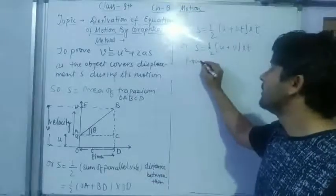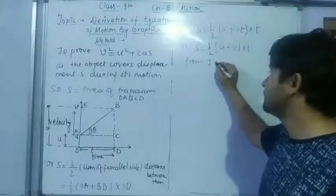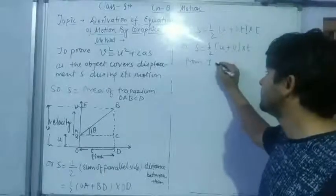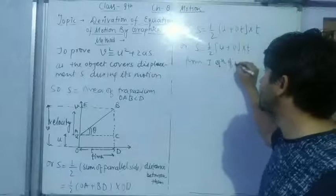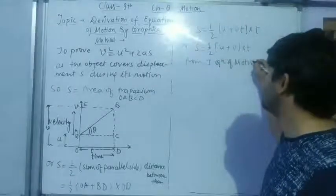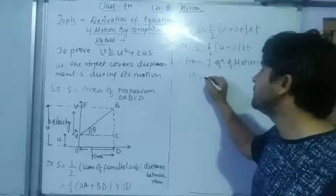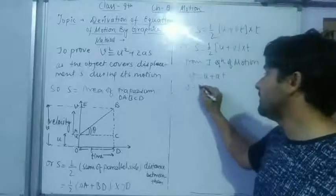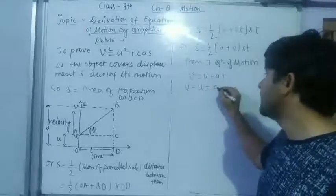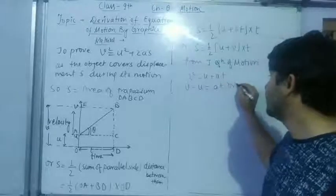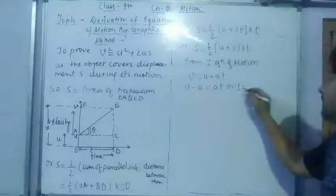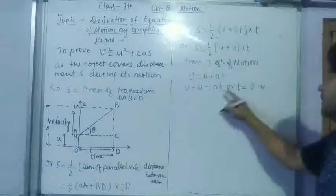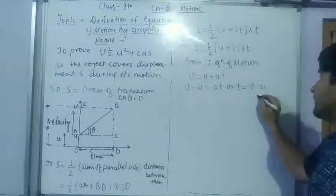From first equation of motion. First equation of motion was V equals to U plus AT. If we transfer this here, it will be V minus U equals to AT, or time T will come out to be from here V minus U upon A.